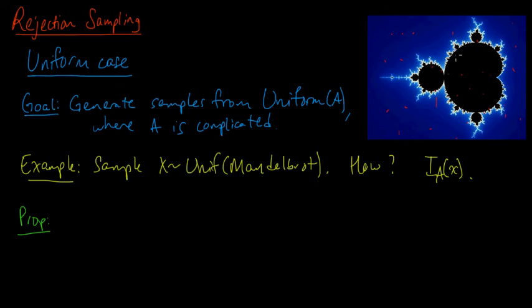And whenever we get a sample that's not in the set, like this one here, when it's not in the Mandelbrot set, then we reject it. We just throw it out and we keep going. We keep going until we get a point in the set.